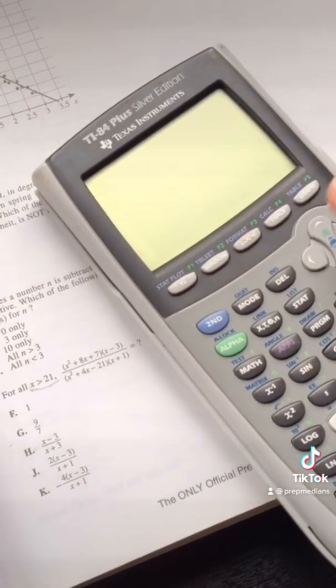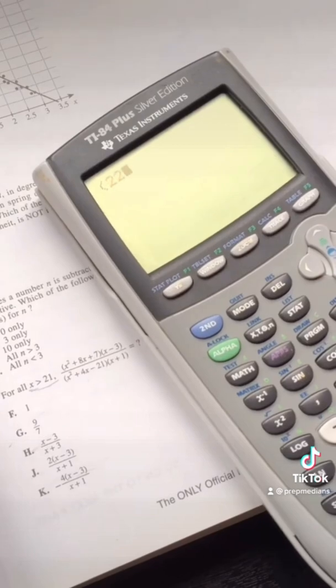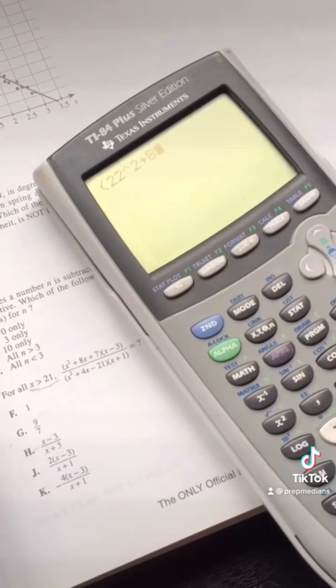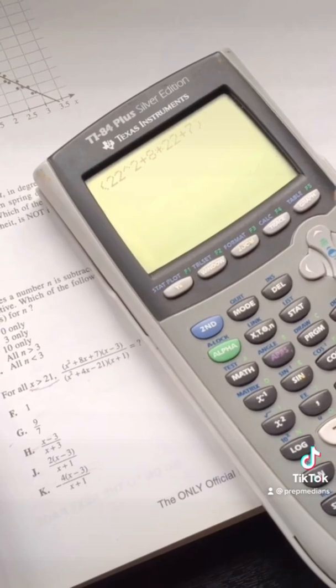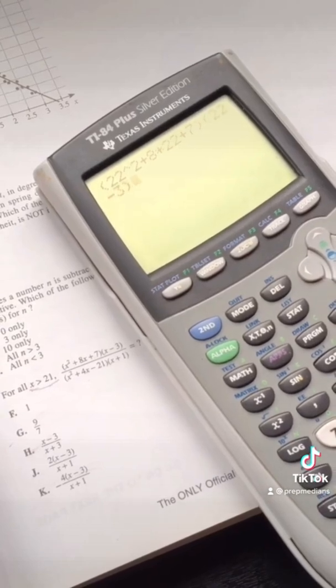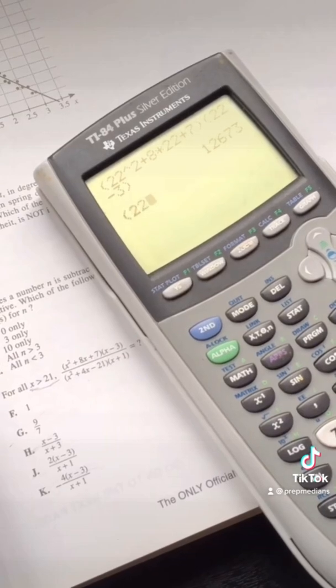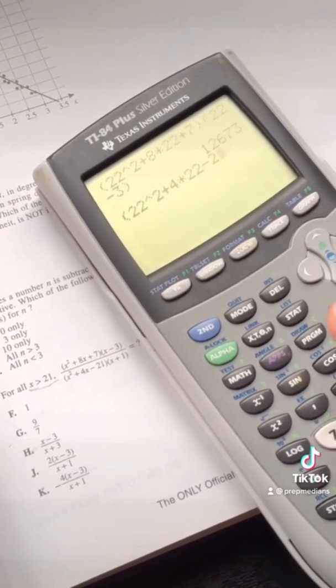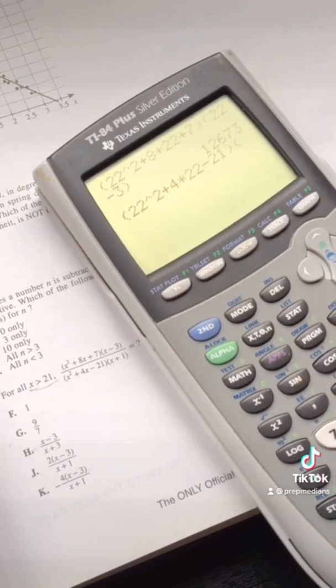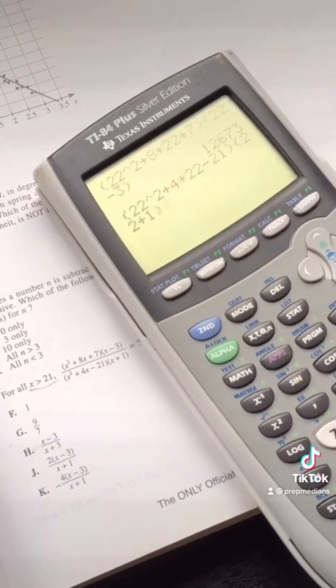We'll just throw it in our calculator. We have 22 squared plus 8 times 22 plus 7, close parentheses, times 22 minus 3, and that gives us 12,673. What about the bottom? We have 22 squared plus 4 times 22 minus 21, close parentheses, times 22 plus 1. And what do we have on the bottom?